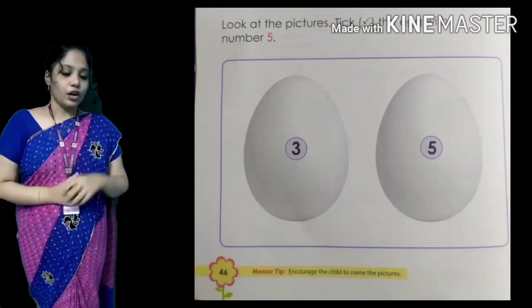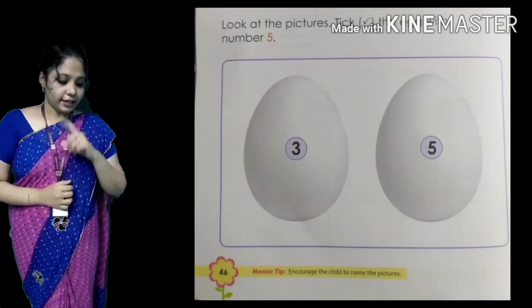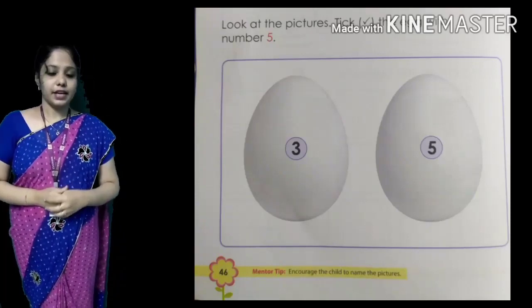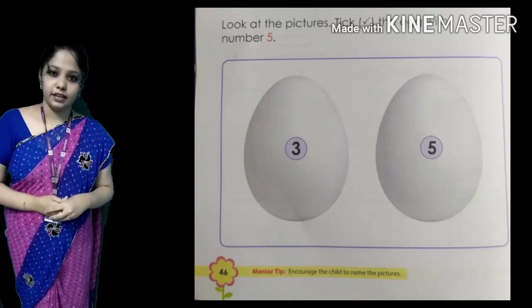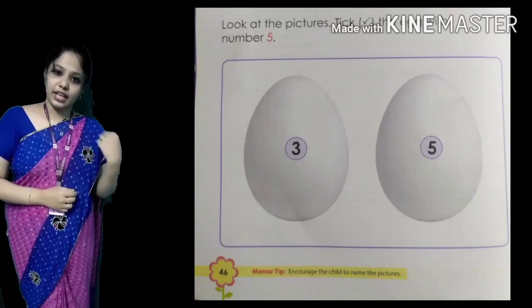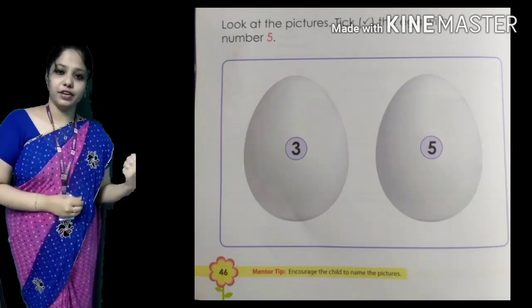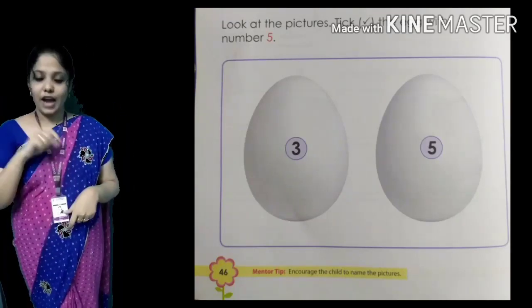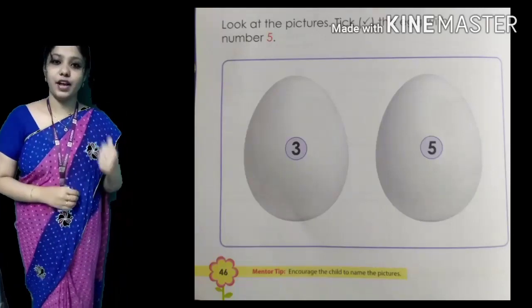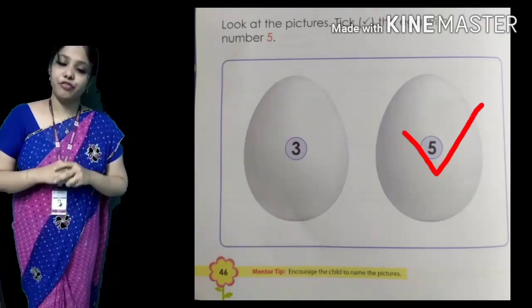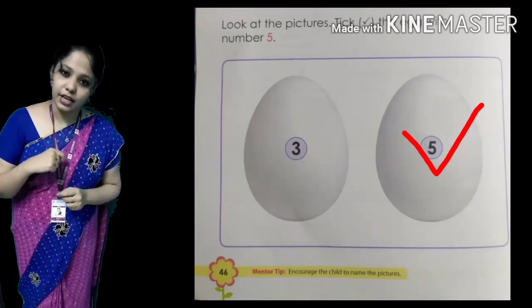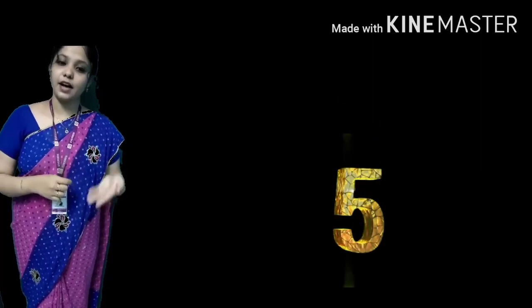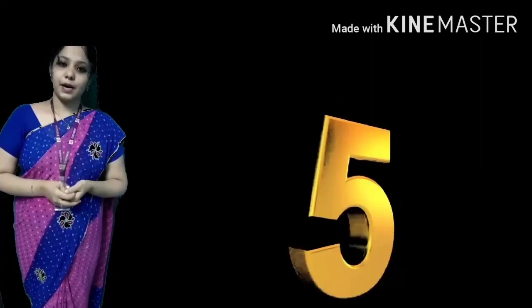Then next, look at the pictures. Tick the egg with number 5. 2 eggs are given. First egg is number 3, second egg is number 5. You have to put a tick mark to the number 5. Very good children.